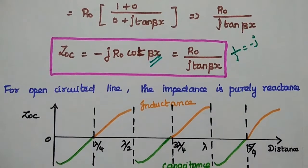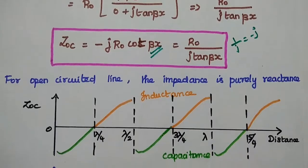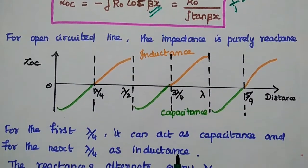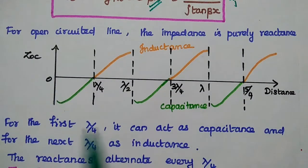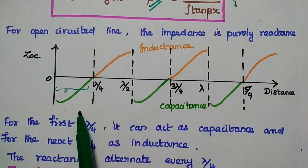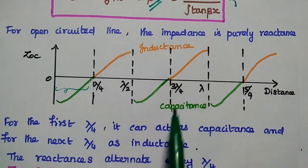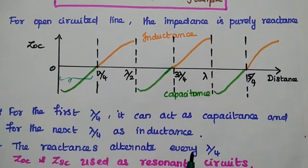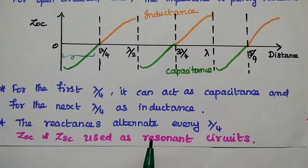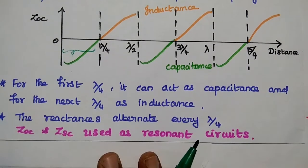So for the open-circuited line, the impedance is again purely reactive — it can be inductive or capacitive. For the first quarter wavelength it acts as a capacitive element, and for the next quarter wavelength it is an inductive element. The reactance changes every λ/4. We can use these open-circuited and short-circuited impedances as resonant circuits based on our applications.